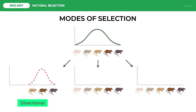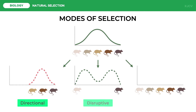There are also cases when both extremes of the spectrum are favored. This happens when mice live in a patchy habitat made up of light and dark rocks, causing mice of an intermediate color to be selected against. This is called disruptive selection.